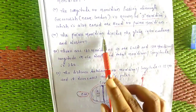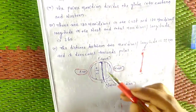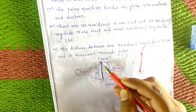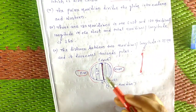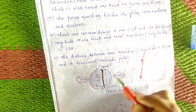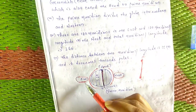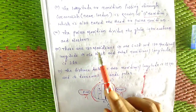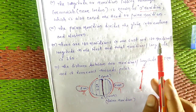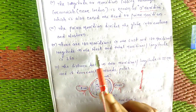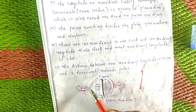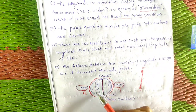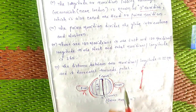The Prime Meridian divides the globe into eastern and western hemispheres. There are 180 meridians in the east and 180 meridians in the west, making 360 meridians in total.